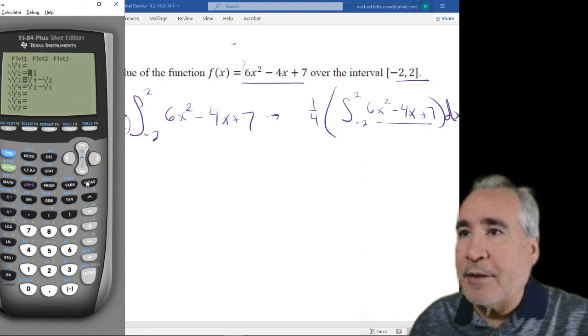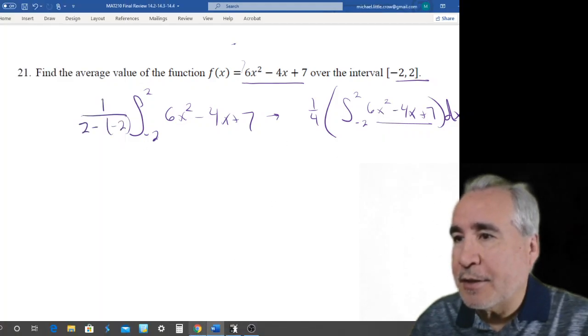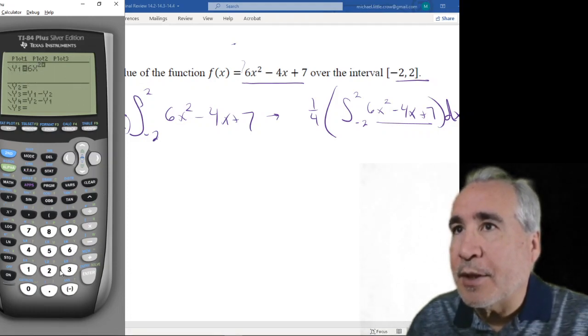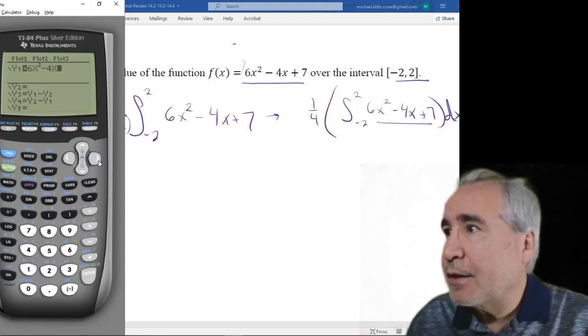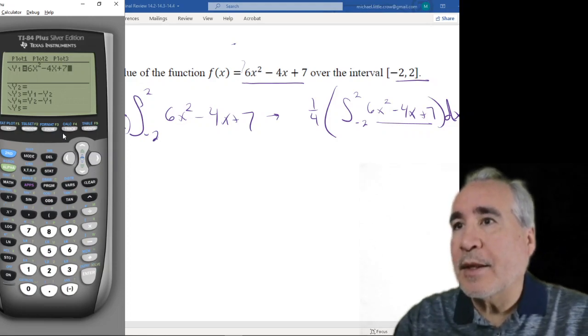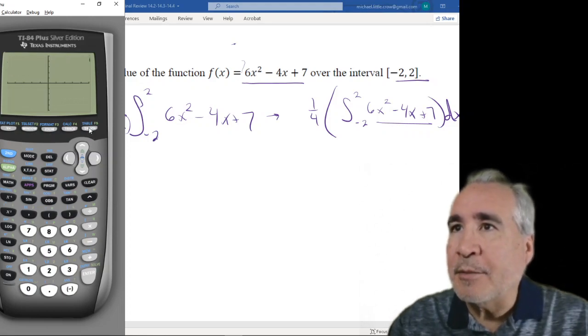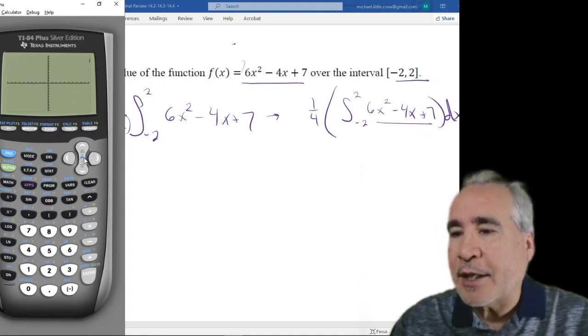So we're going to clear these out, and I'm going to come and turn this y1 minus y1 off. We're actually only going to have a y1 in this case. We plug in this function. So we'll do 6x squared minus 4x plus 7. I'm going to look at the graph. We're going from negative 2 to 2. I think my windows are probably going to be just fine. Actually, it's not because plus 7 is above here. Let's just do a zoom standard, which is good practice anyway.